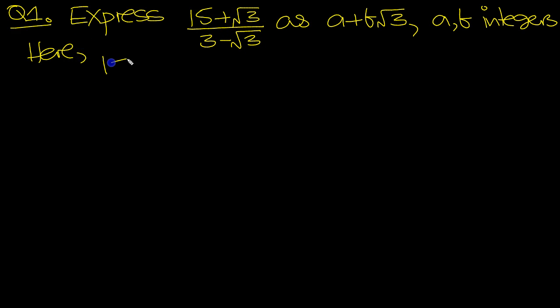So here, 15 plus root 3, over 3 minus root 3. So if we multiply top and bottom by 3 plus root 3, then we'll be able to have a number on the bottom.